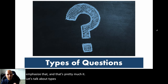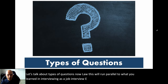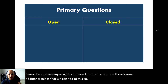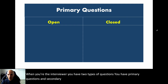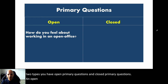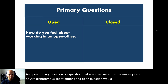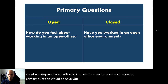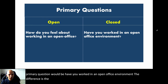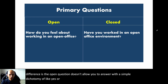Now let's talk about types of questions. When you're the interviewer, you have two types of questions: primary questions and secondary questions. Within primary questions, there are two types: open primary questions and closed primary questions. An open primary question is one not answered with a simple yes or no or a dichotomous set of options — for example, 'How do you feel about working in an open office?' A closed-ended primary question would be, 'Have you worked in an open office environment?' — which can be answered yes or no.